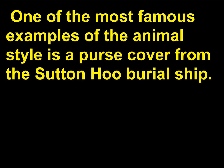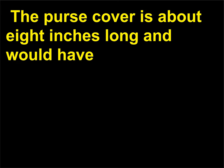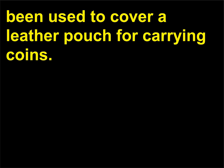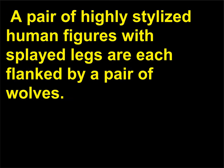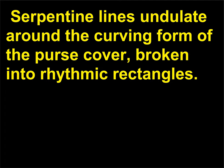One of the most famous examples of the animal style is a purse cover from the Sutton Hoo burial ship. The purse cover is about 8 inches long and would have been used to cover a leather pouch for carrying coins. The purse was designed with interweaving bands of gold surrounding deep blue and red plaques of enamel and garnet. A pair of highly stylized human figures with splayed legs are each flanked by a pair of wolves, and serpentine lines undulate around the curving form of the purse cover, broken into rhythmic rectangles.